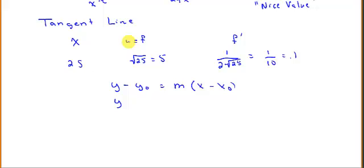So here we'd have y minus, well, the y value, what would be given by f, y minus 5, is equal to one-tenth, the slope, given by f prime, times the quantity x minus 25.